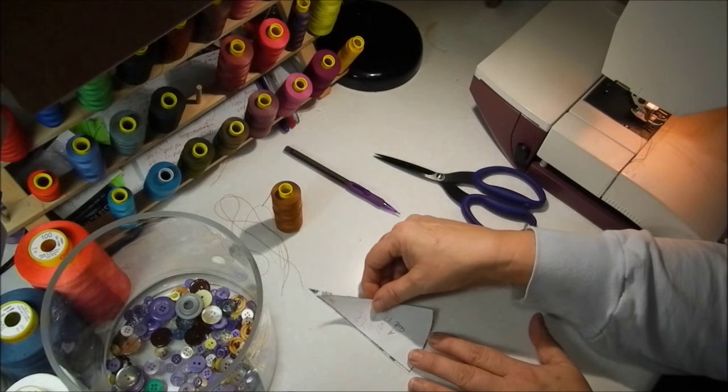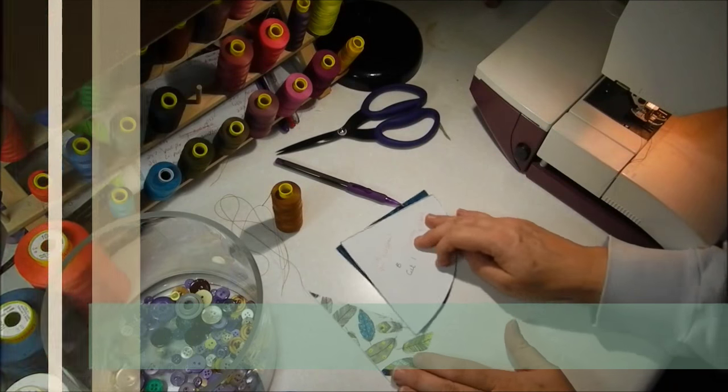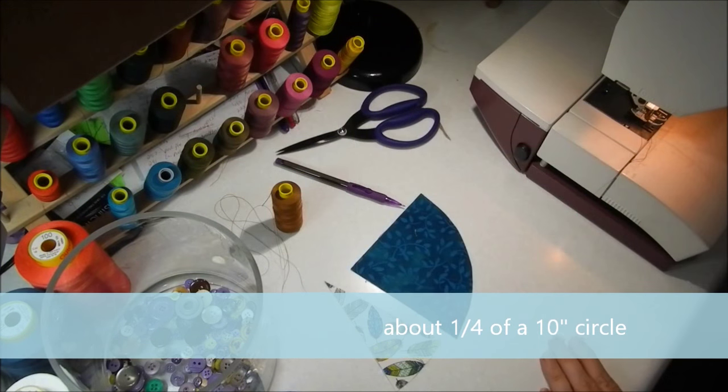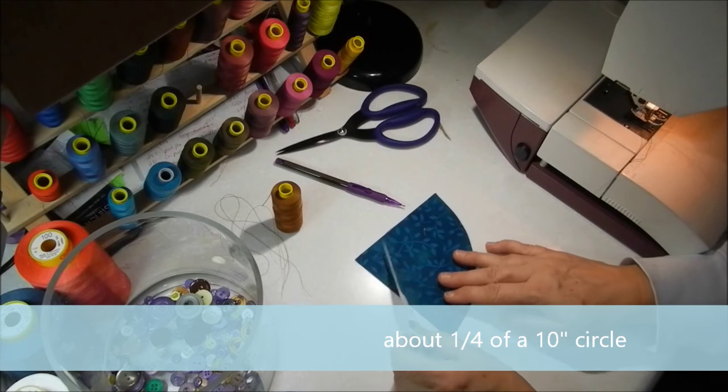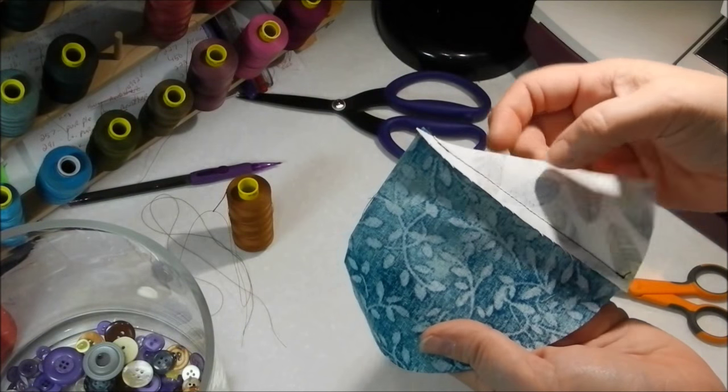We're going to start with the front of our owl. We're going to attach it to the body and sides. Put the pieces right side together, and you give it a quarter inch seam.